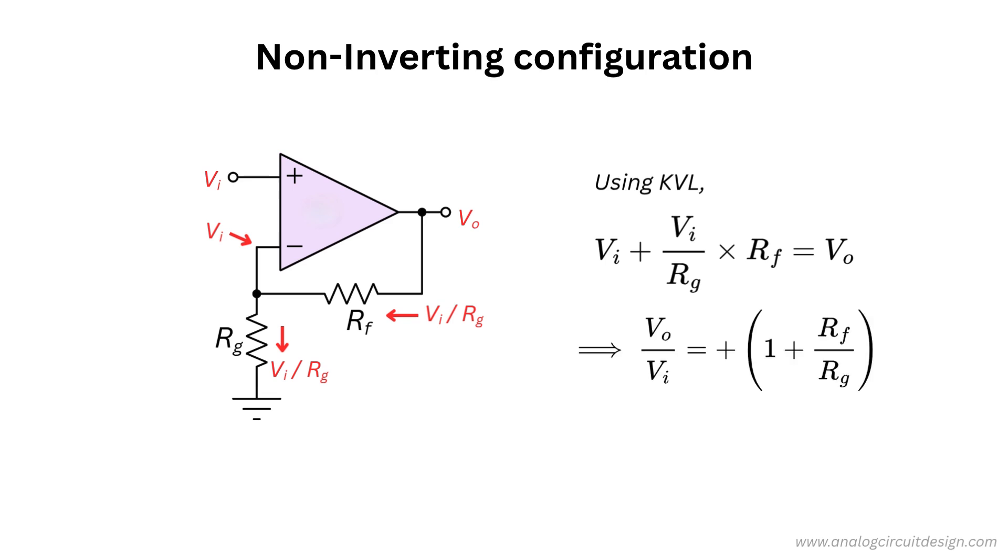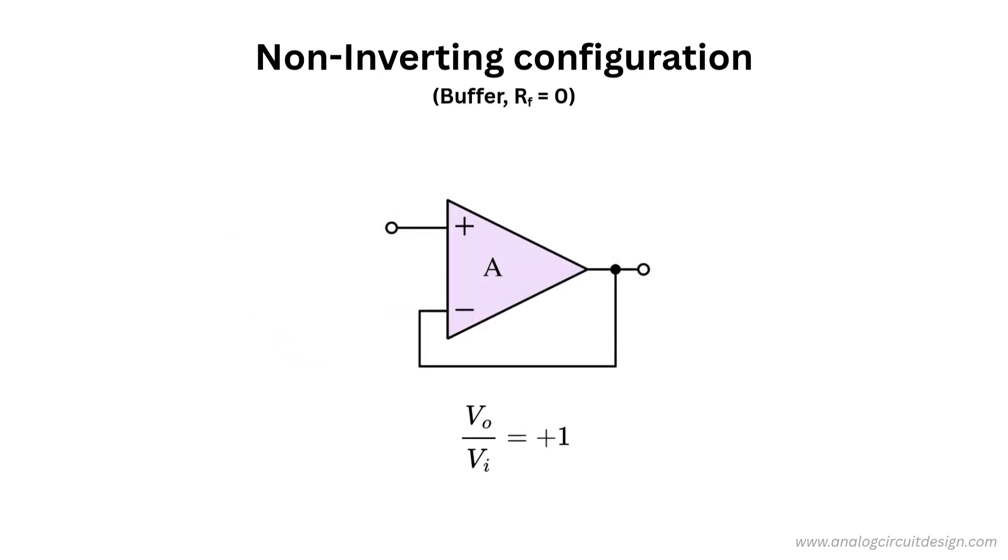Here, gain is always greater than or equal to unity, and the output is in phase with input. If we set the feedback resistor RF to zero in a non-inverting amplifier configuration, the circuit effectively becomes a buffer amplifier, also known as a unity gain amplifier.